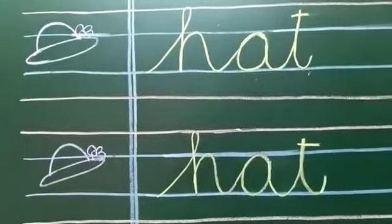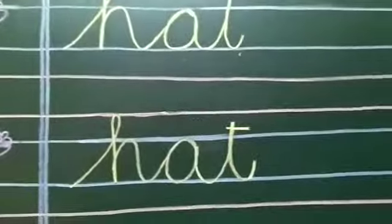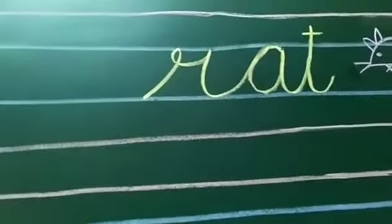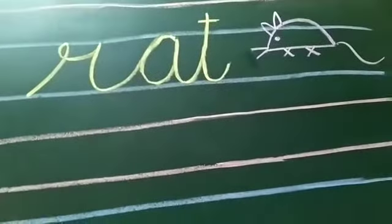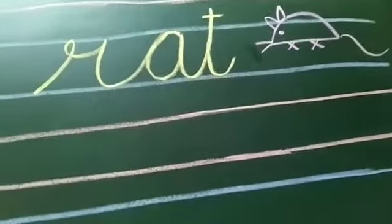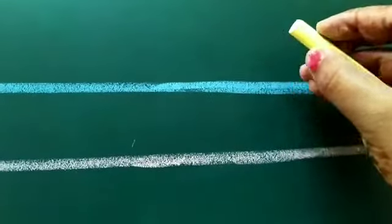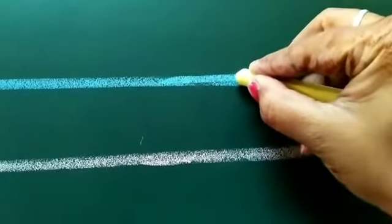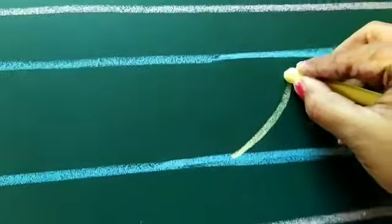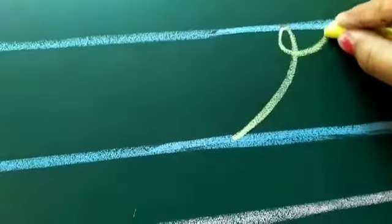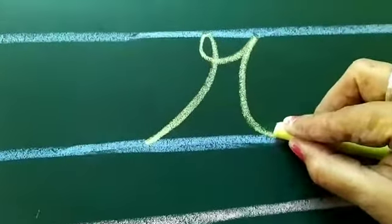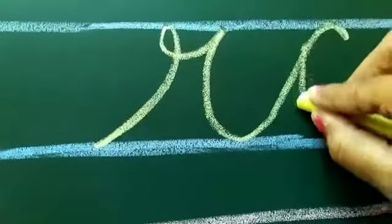Okay, now we will write rat. Now we will learn how to write rat in cursive writing. Okay children, let's start. First, okay children, let's start writing rat. R-A-T, rat.